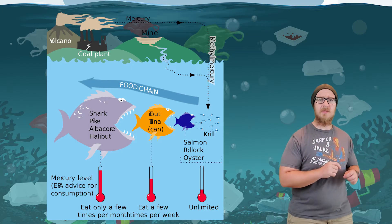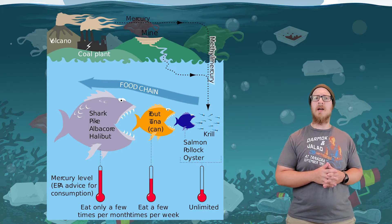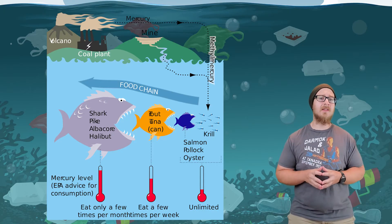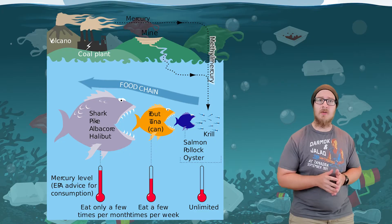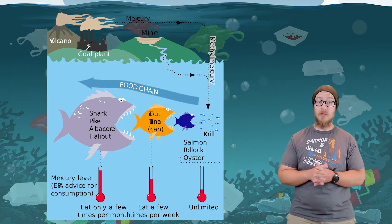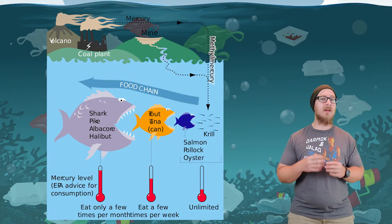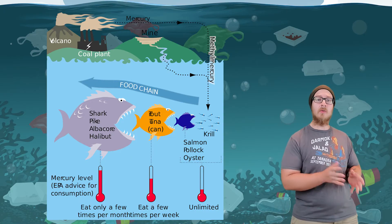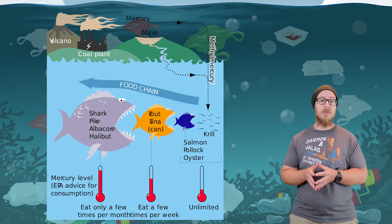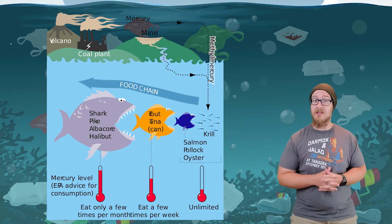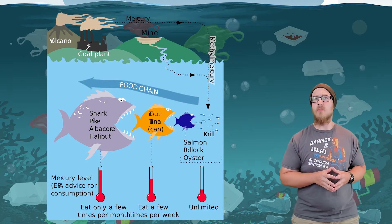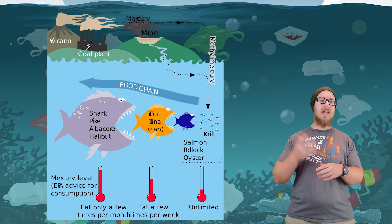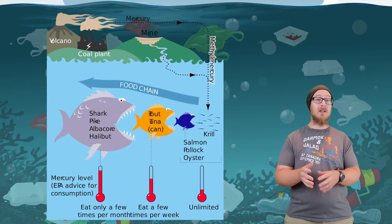Mercury is another substance that bioaccumulates and biomagnifies. Mercury enters waterways from coal-fired power plants and is absorbed by bacteria in the water, converting it into methylmercury, which is extremely toxic. It can pass the blood-brain barrier and damage brain tissue, impair growth and brain development, leading to learning disabilities in humans and high mortality in wildlife. This is dangerous for humans because mercury biomagnifies all the way up to fish we commonly eat, like pike and tuna.